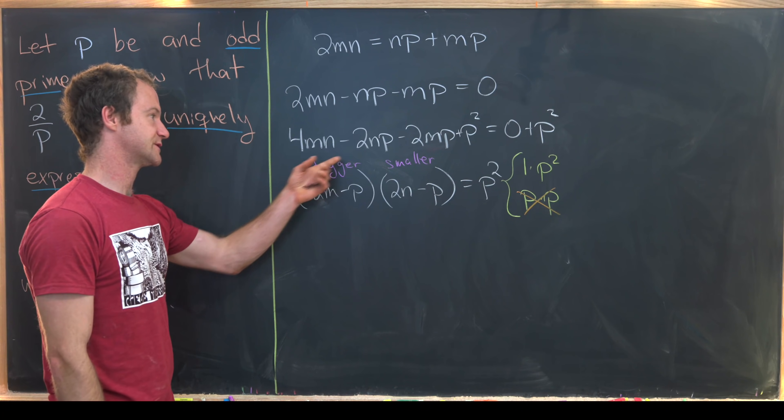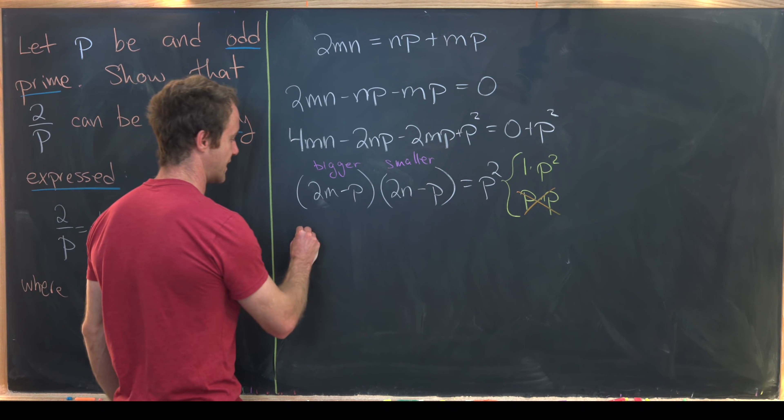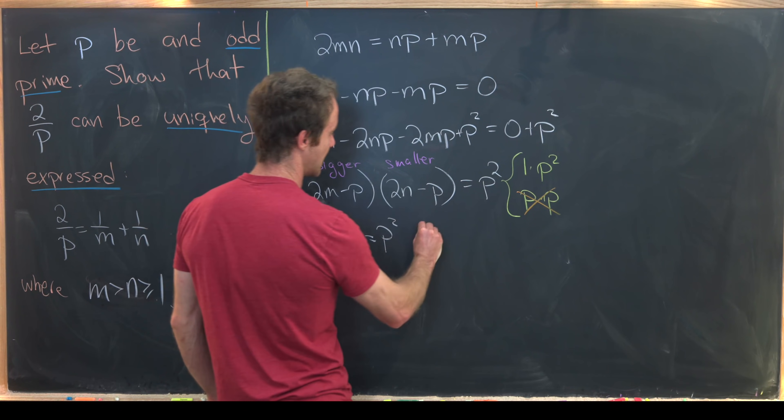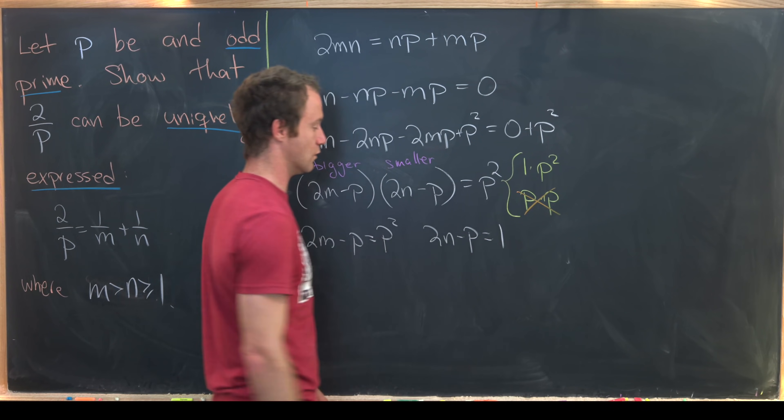So that tells us the factorization we need is 1 times P squared. But then again since we know this one is bigger and this one is smaller, we know that 2M - P equals P squared and 2N - P is equal to 1.